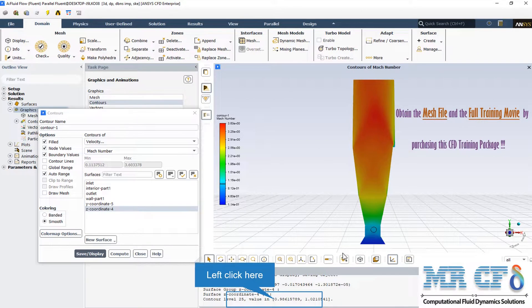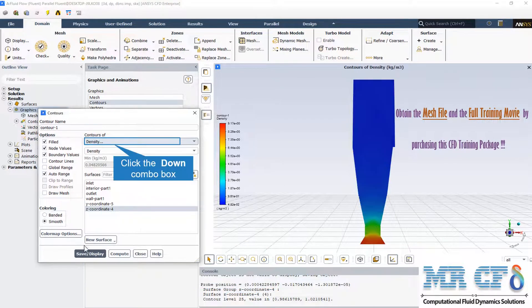In the throat zone, the Mach number reaches 1. Here is the density contour.